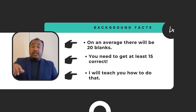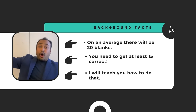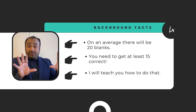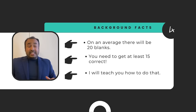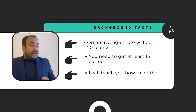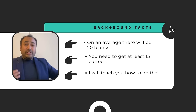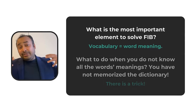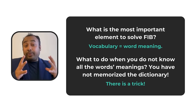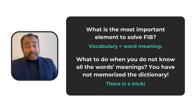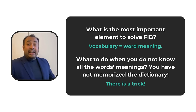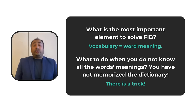Getting 15 out of 20 is not easy, and the number of blanks varies — one student might get 19, another might get 22. But on average it's 20, and you need to get 15 correct. So how do you solve these blank questions? What is PTE really looking for?